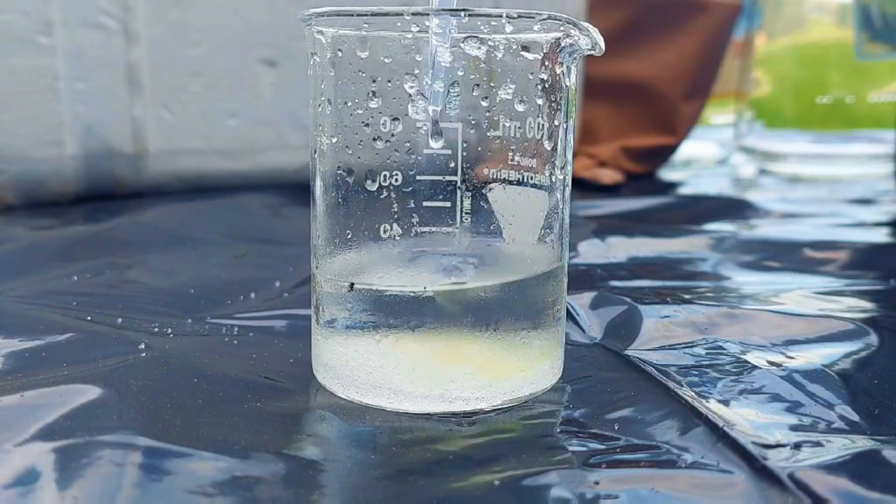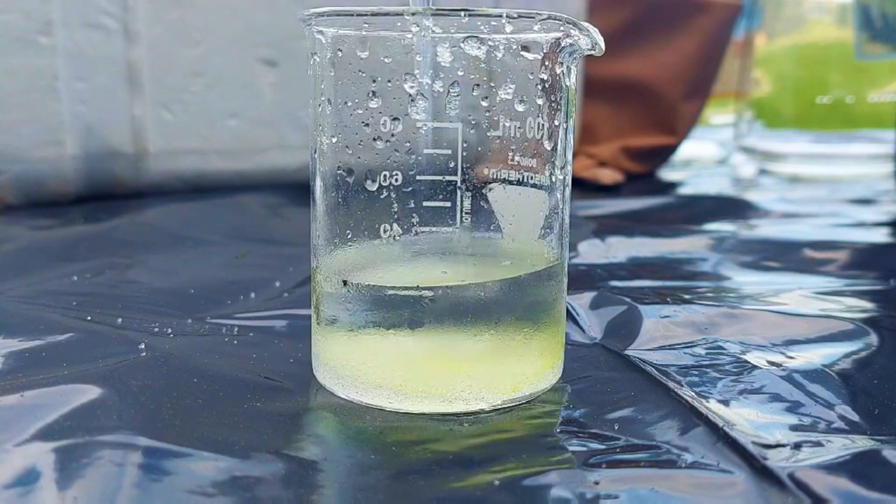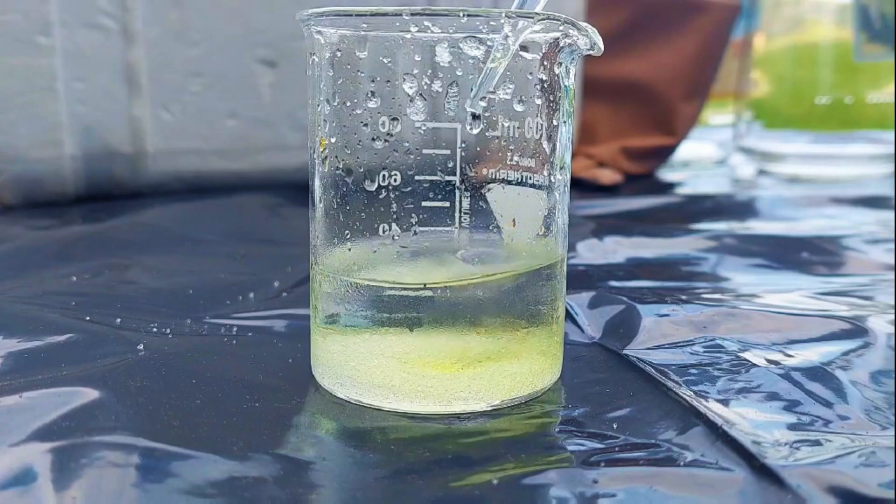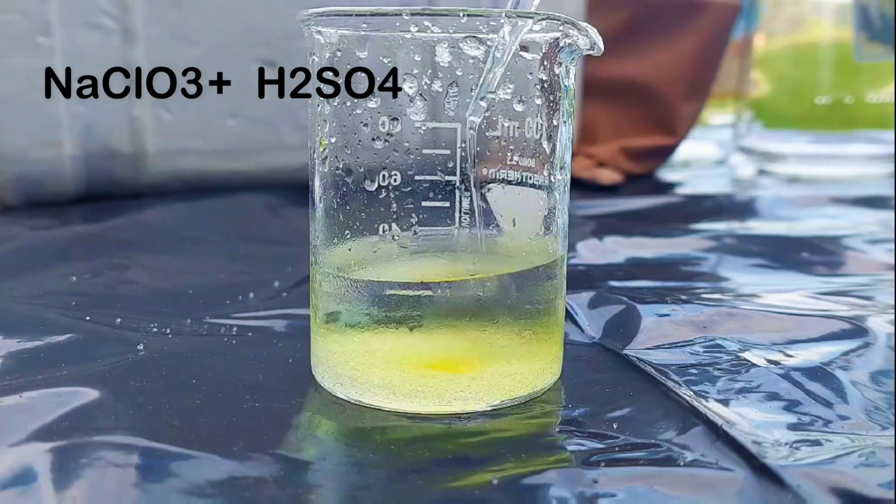Hello and welcome back. Today, we will be doing some yellow chemistry, aka chloric acid. We will get it by reacting sodium chlorate with dilute sulfuric acid.